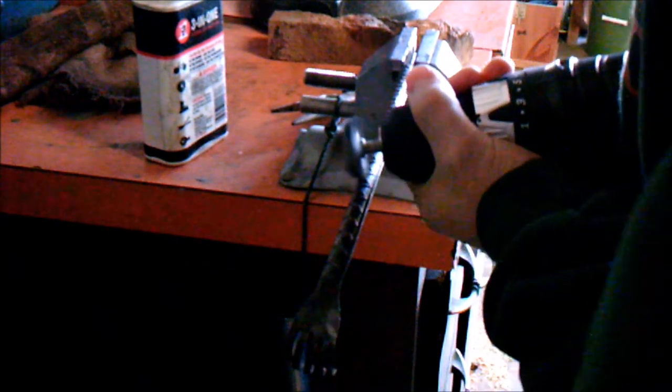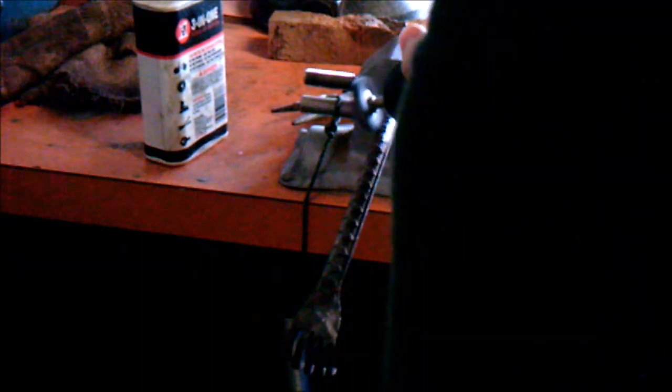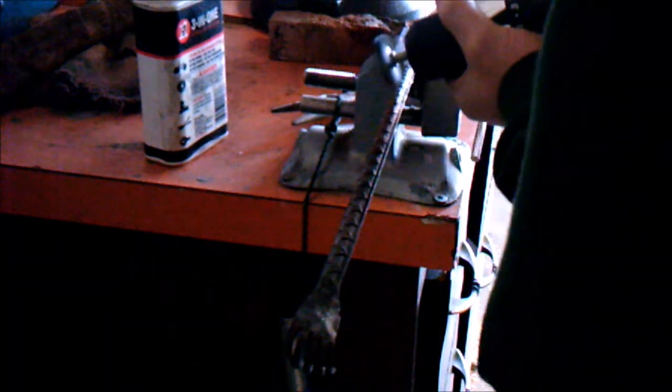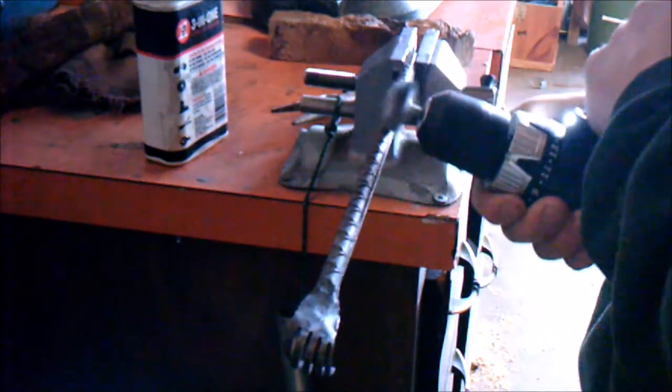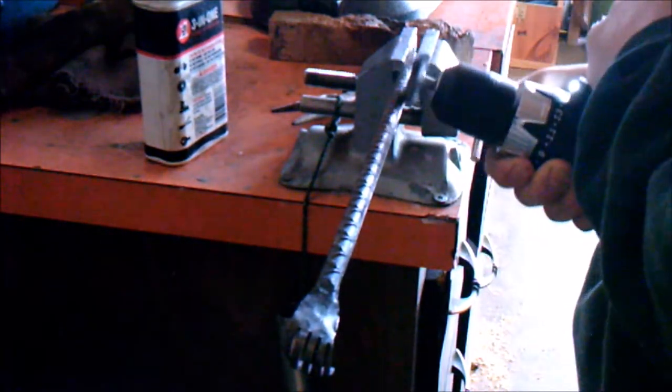Moving on to the shaft of the back scratcher, I'm using a wire wheel to knock off any rust, scale, or debris that's left on there. It'll leave it looking relatively shiny but it'll still have sort of a black patina on it.